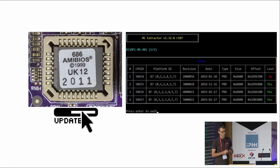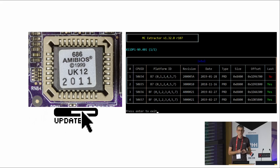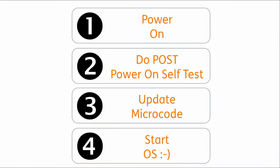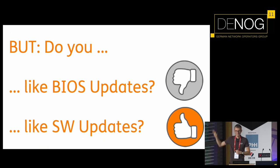When you analyze a BIOS firmware file you can see on the right side that there are different kinds of microcodes in there for different CPUs. Some motherboards support different CPUs and for most of them the most current update is provided, for some of them none. When you power on a system, it does its power-on self-test, updates the microcode, and then starts the OS. A straightforward process — but who of you actually likes BIOS updates?